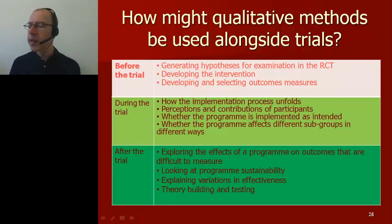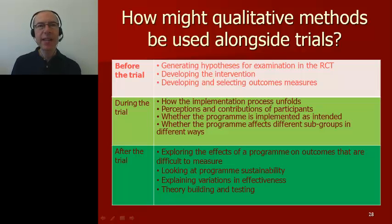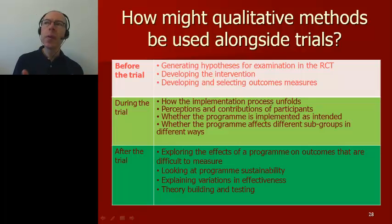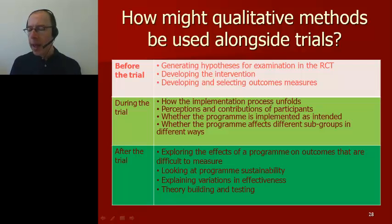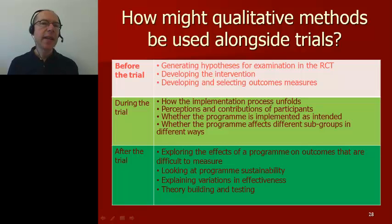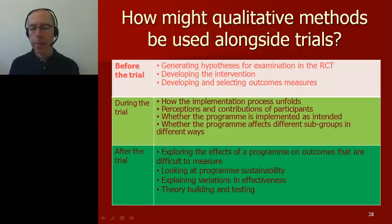The use of qualitative methods in this context helped us understand why the intervention was not being implemented as intended. Qualitative methods can also explore the contextual, social, and individual factors affecting implementation, and whether the program affects subgroups in different ways — for example, whether poorer and wealthier TB patients experience a voucher intervention differently.